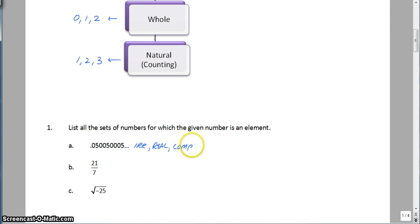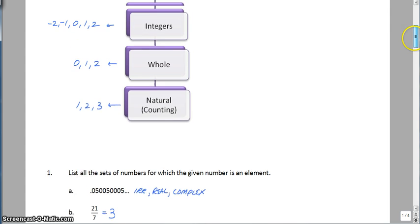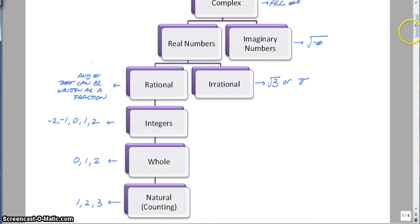Why don't you guys try B and C. Feel free to pause. So 21 divided by 7 is 3. 3 is a natural number. So if we go back to our chart, we'll start here. And we will hit every number group on the way back up to complex. So you would just have to list natural, whole, integers, rational, real, and complex.